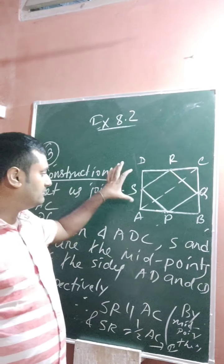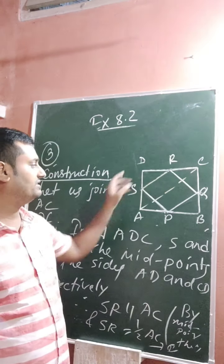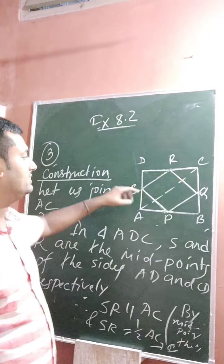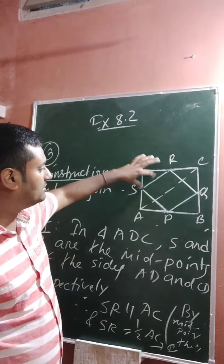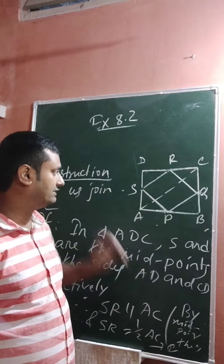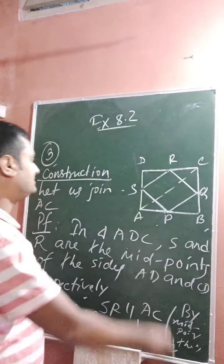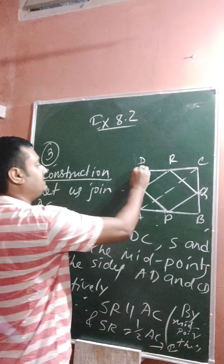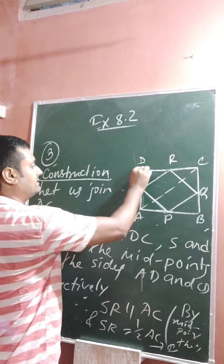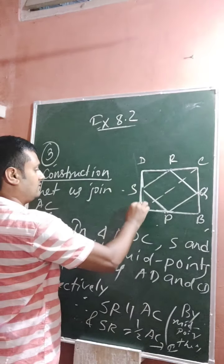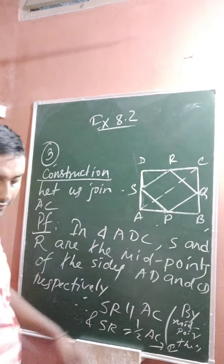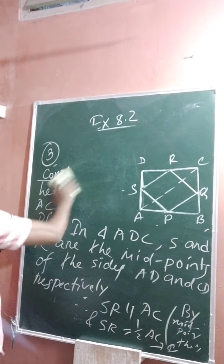Since S is the midpoint of AD and R is the midpoint of CD, in triangle ADC, joining the two midpoints must be parallel to the third side and equal to half of the third side. So SR is parallel to AC and SR is equal to half of AC. This is equation number 1.